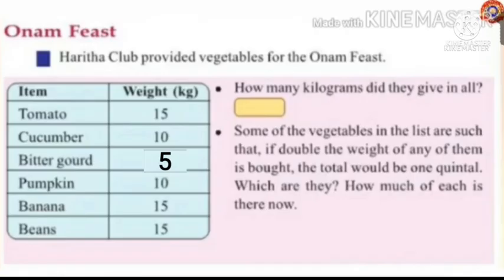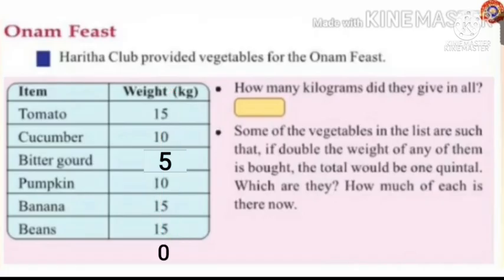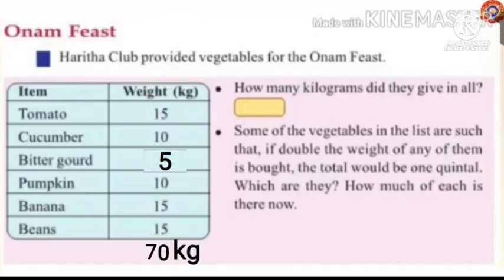Bitter gourd: 5 kilograms, pumpkin: 10 kilograms, banana: 15 kilograms, and beans: 15 kilograms. How many kilograms did they give in all? To find out, add the weight of each item: 5 plus 0 is 5, 5 plus 5 is 10 — write 0 in the ones place and carry 1. Then 1 plus 1 is 2, plus 1 is 3, plus 1 is 4, plus 1 is 5, plus 2 is 7 — that gives 70. They gave 70 kilograms in all.